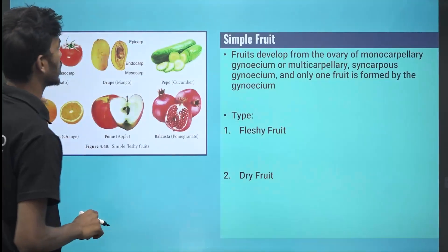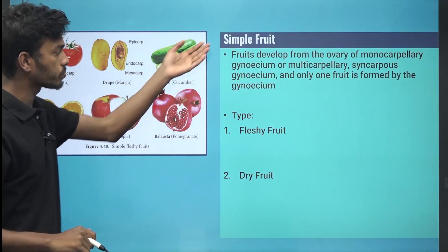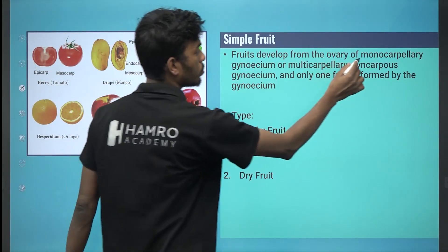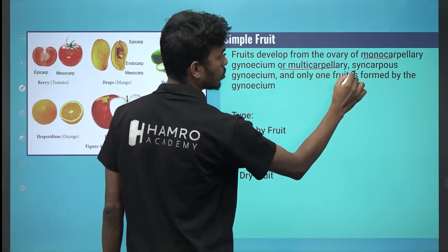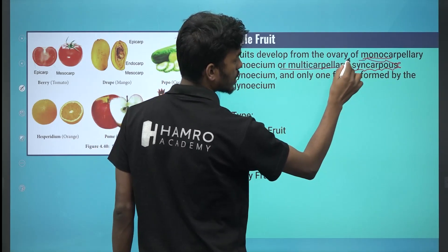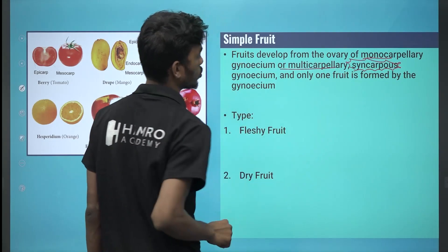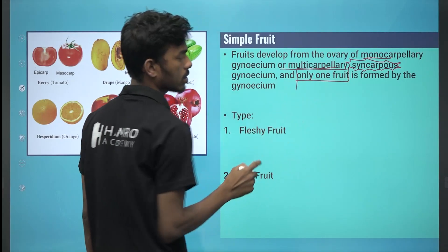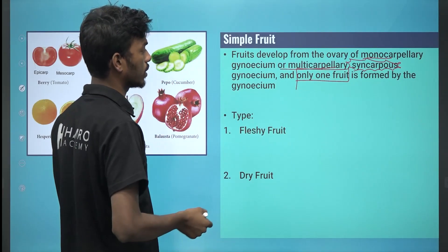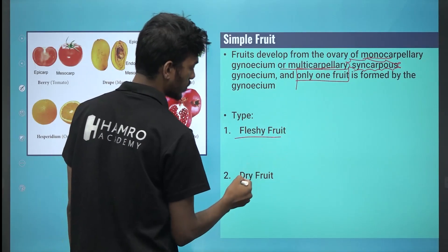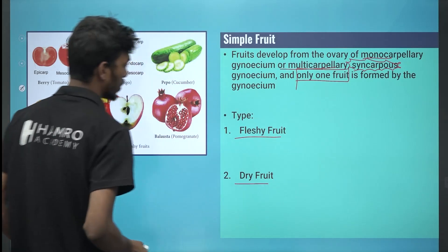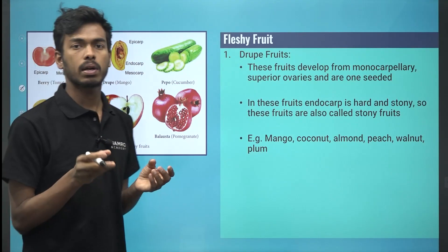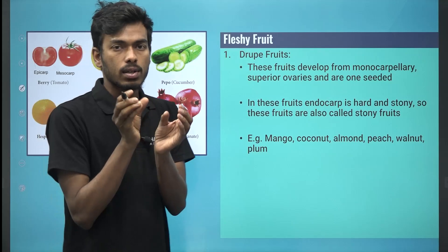Why do we call it a simple fruit? The fruit can be monocarpellary or multicarpellary — what is syncarpus? The fruit is found from the gynoecium. Now, here is the big issue of fleshy and dry fruit. First, we have fleshy fruit.